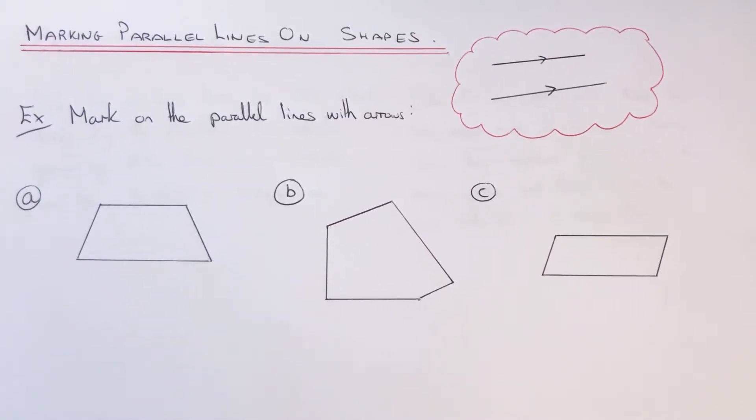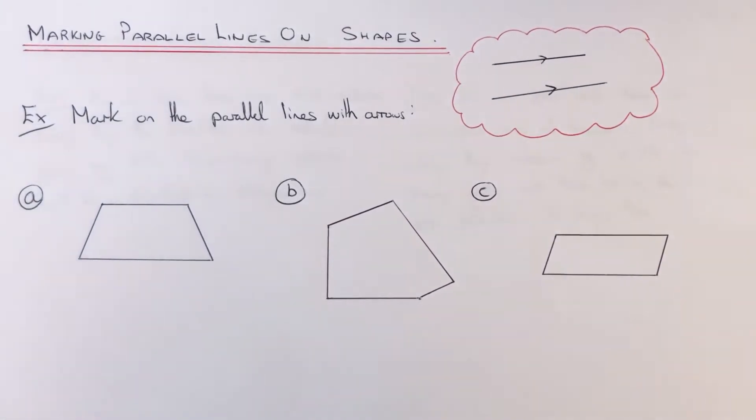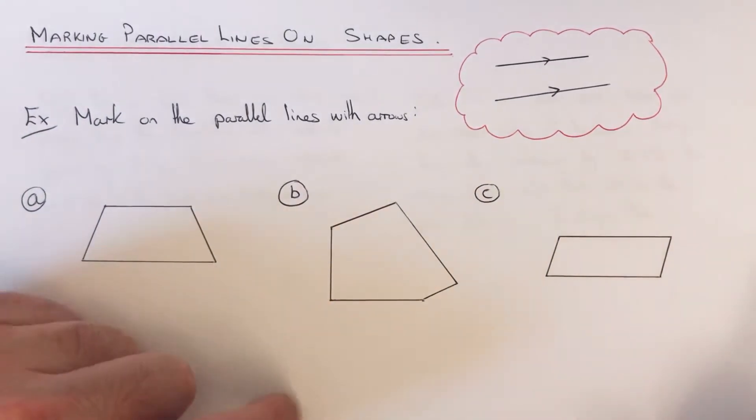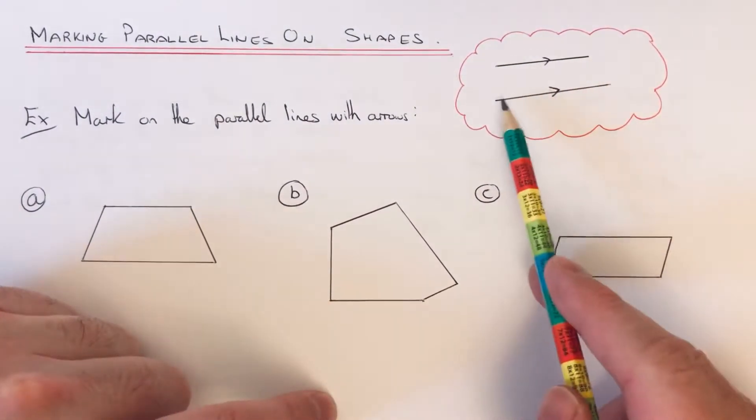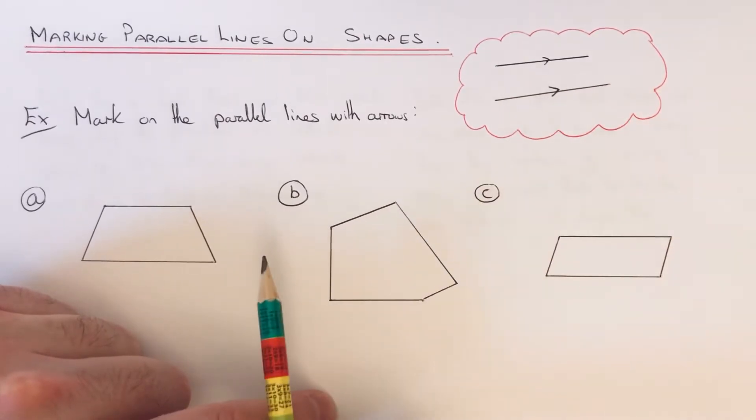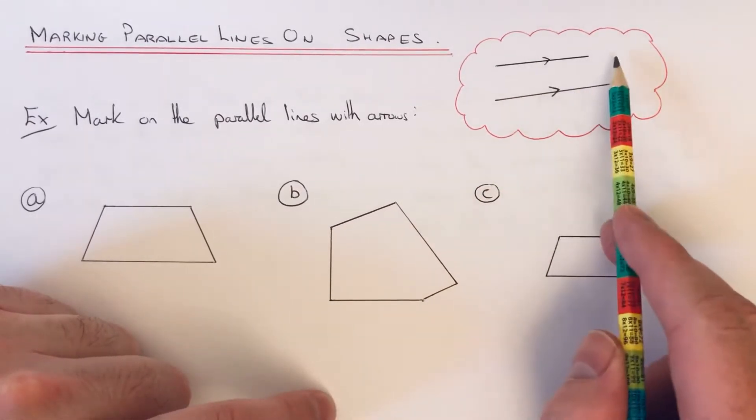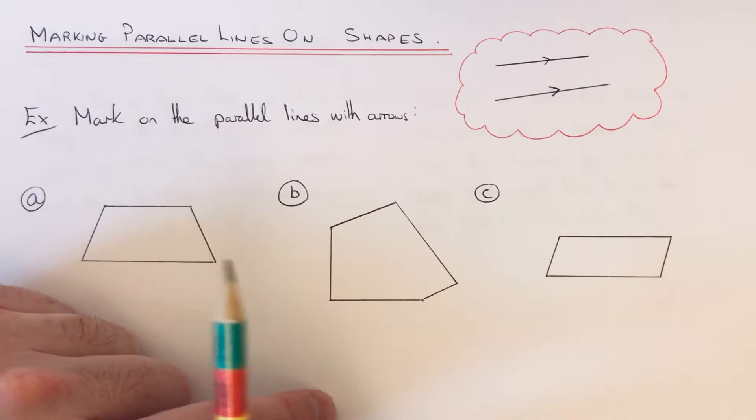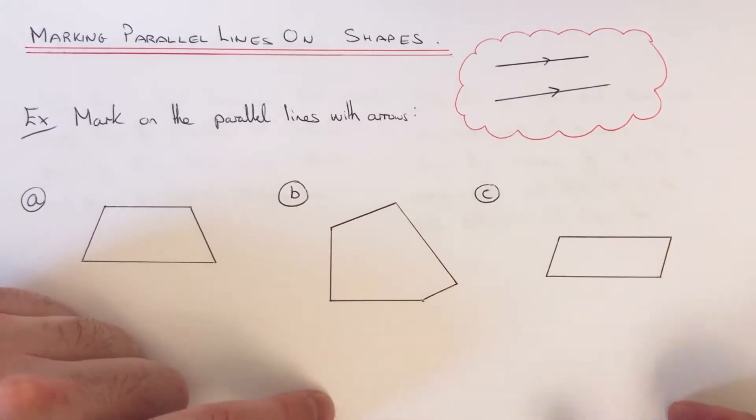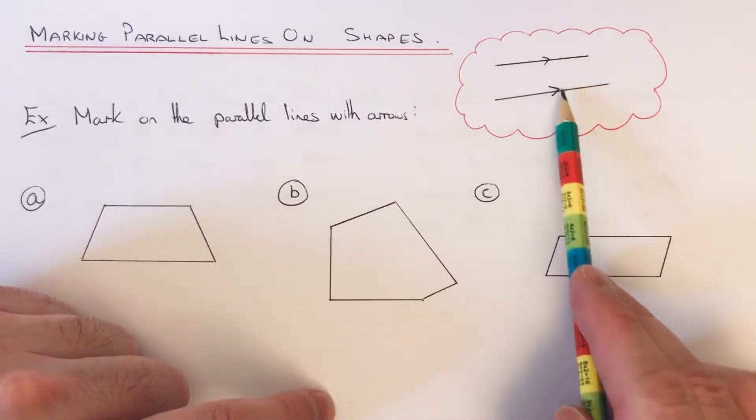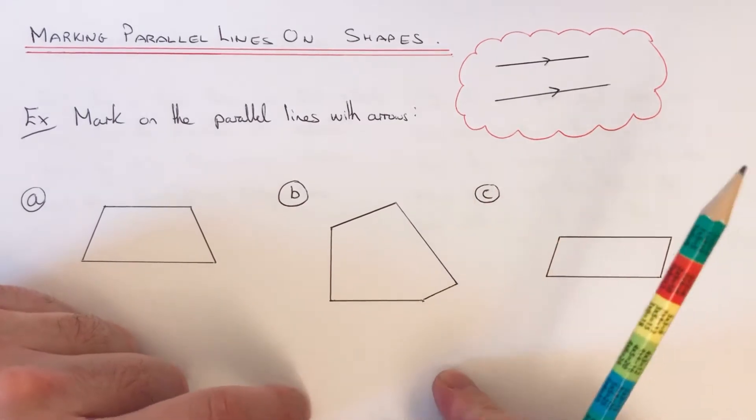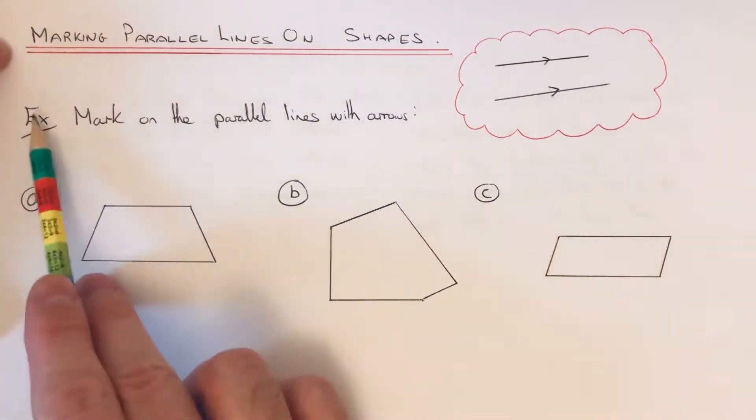Hi guys, welcome back. Today I'm going to show you how to mark parallel lines on shapes. Parallel lines are two lines which travel in the same direction. If you extend the two lines, the lines will never meet, and you can mark parallel lines with a pair of arrows.